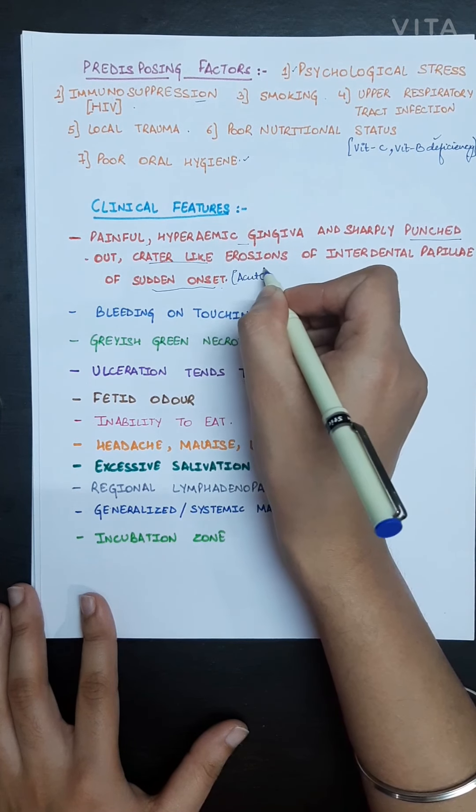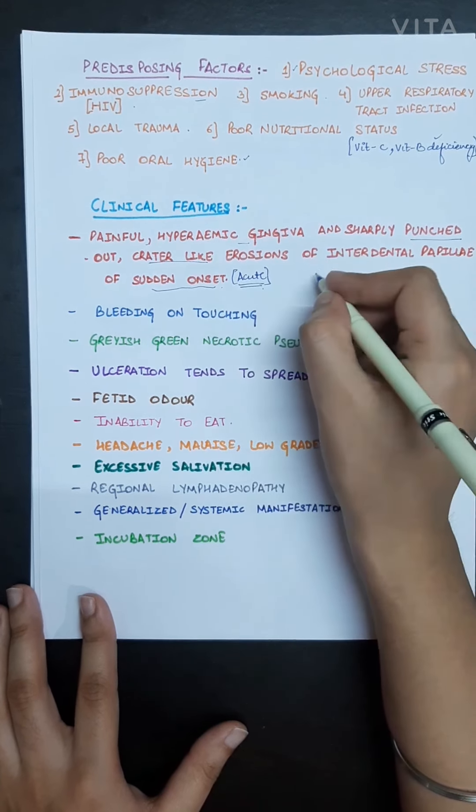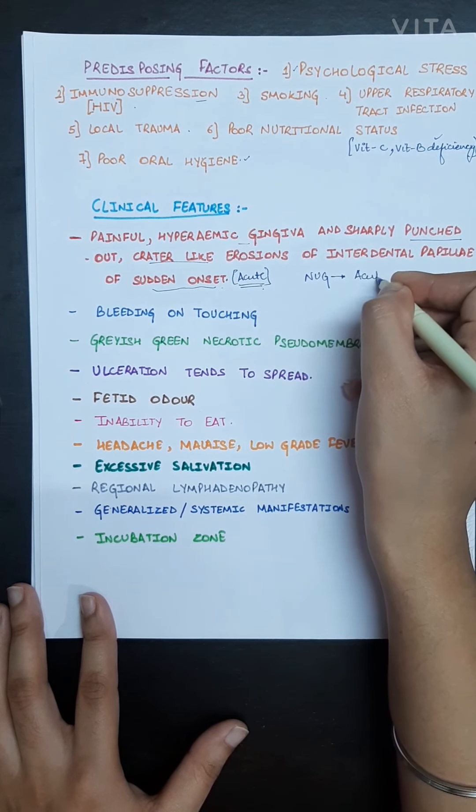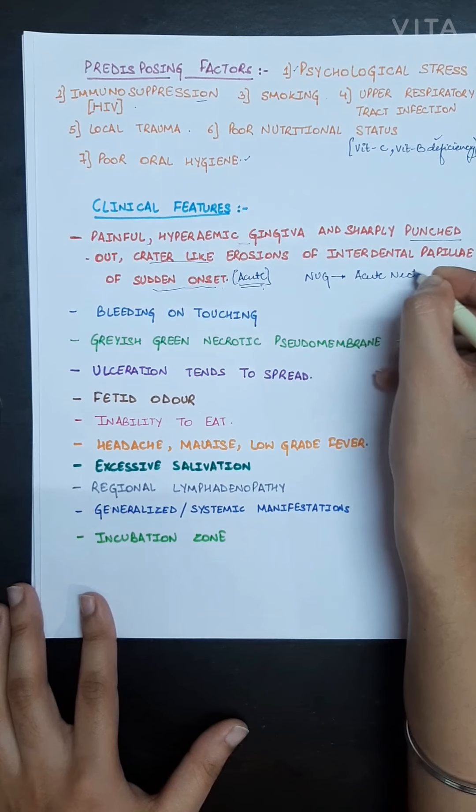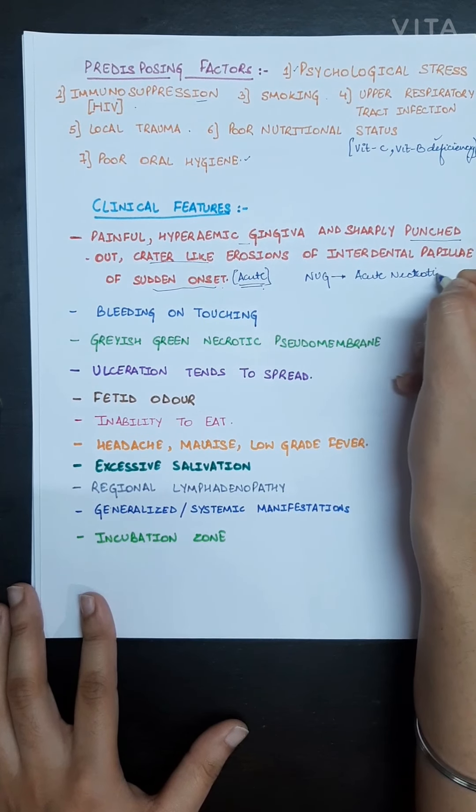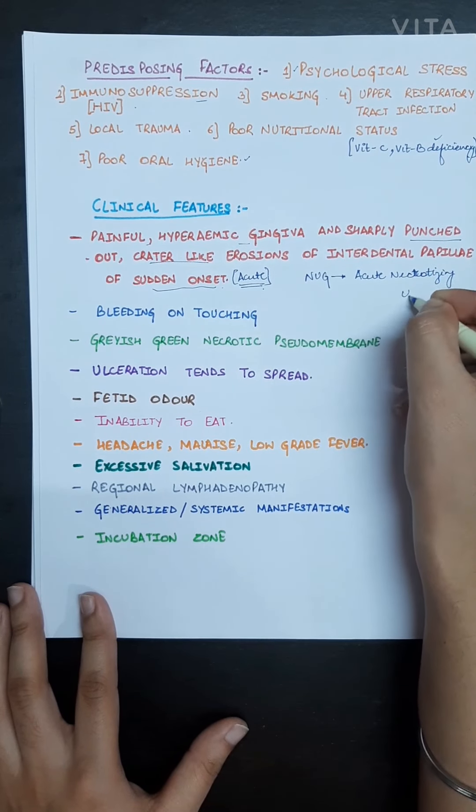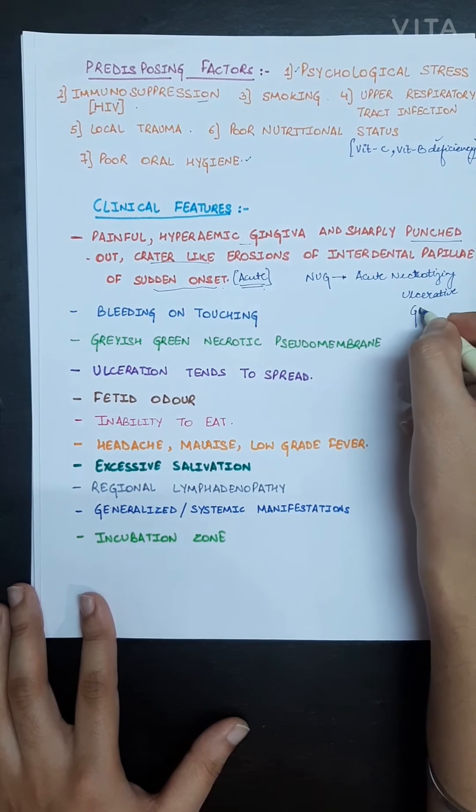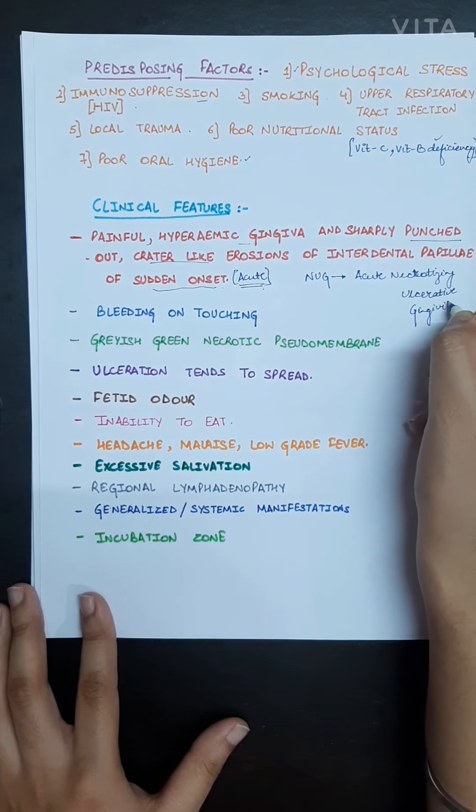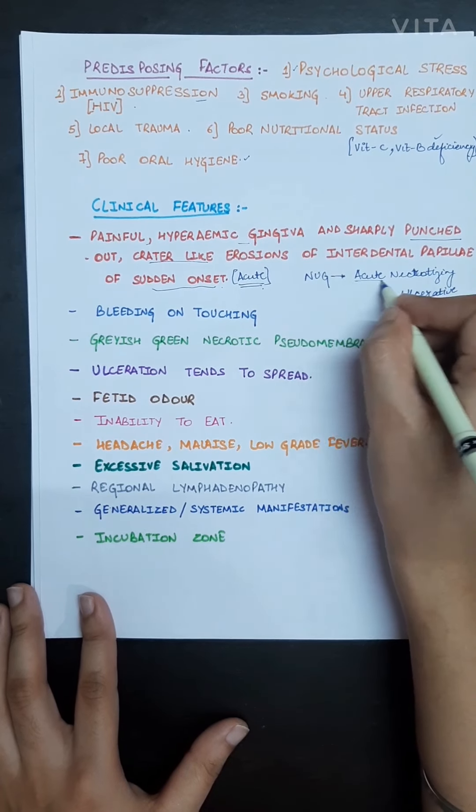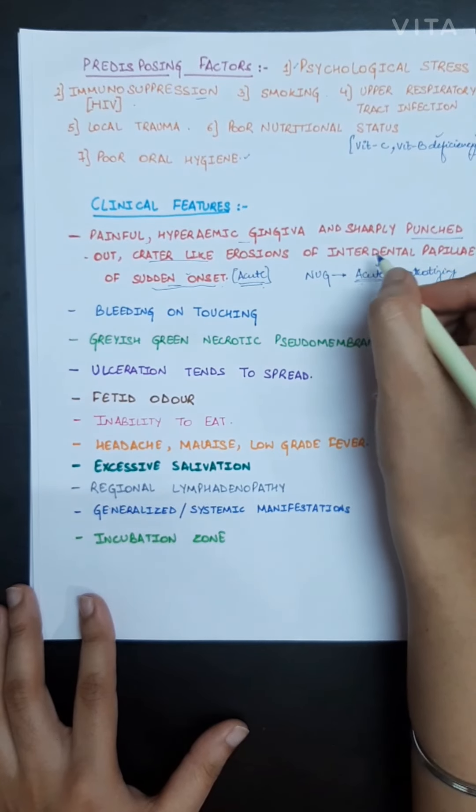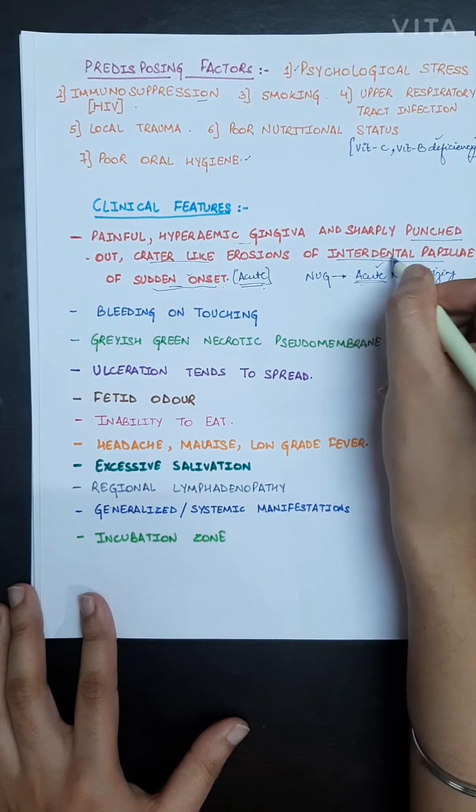That's why NUG is sometimes known as acute necrotizing ulcerative gingivitis. The term acute is used because it is of sudden onset. It involves firstly the interdental papilla.